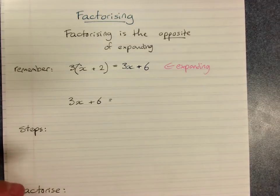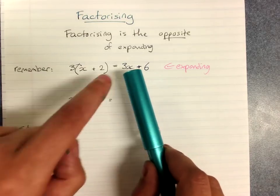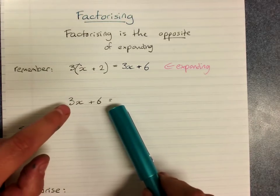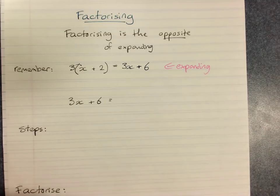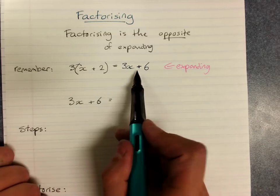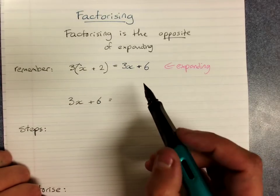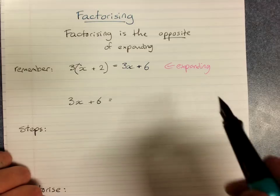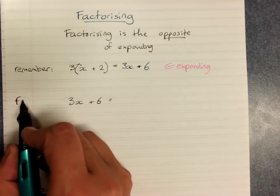Now you see that I've got the same expression that we just got by expanding down here. Factorizing is the opposite of expanding, so we'll expect to go back from here back to in brackets.